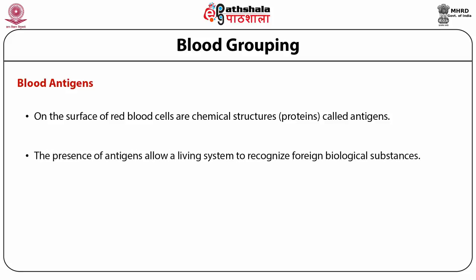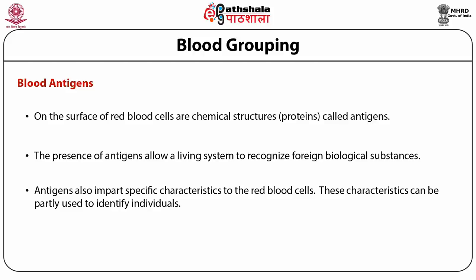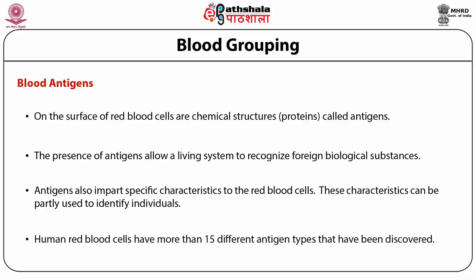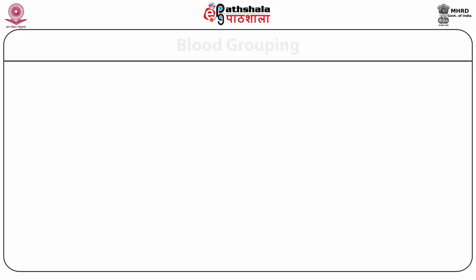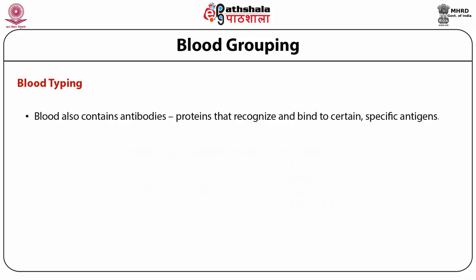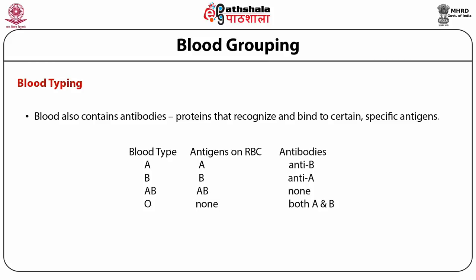Blood antigens on the surface of red blood cells are chemical structures — proteins called antigens. The presence of antigens allows a living system to recognize foreign biological substances. Antigens also impart specific characteristics to red blood cells, which can be used to identify individuals. Human red blood cells have more than 150 different antigen types discovered so far. Blood also contains antibodies, proteins that recognize and bind to specific antigens. In blood typing: type A has antigen A and anti-B antibodies; type B has antigen B and anti-A antibodies; type AB has antigens A and B with no antibodies; and type O has no antigens but has both A and B antibodies.